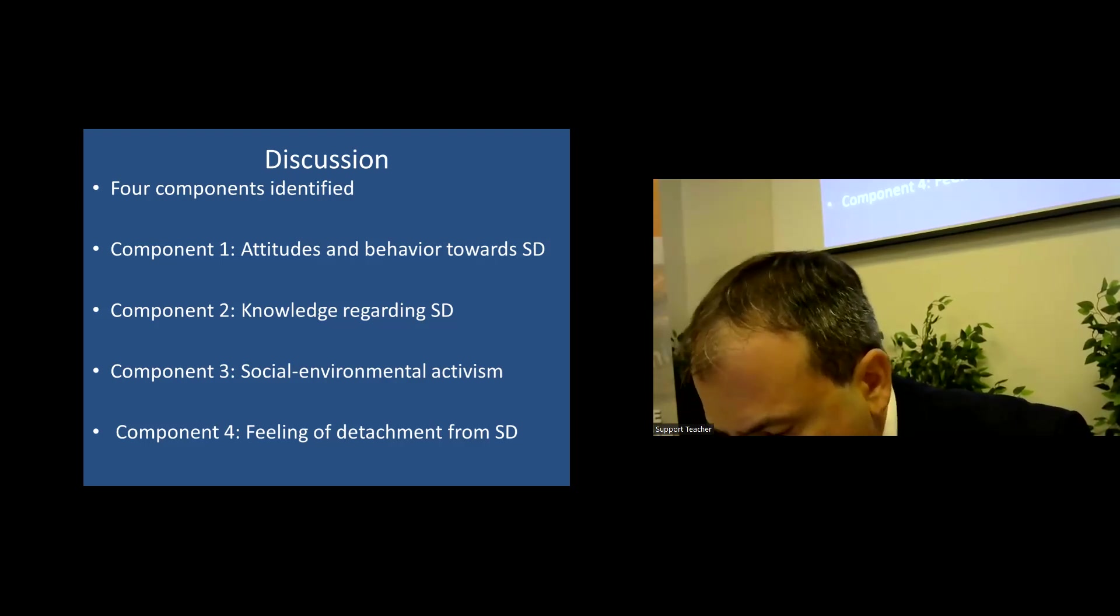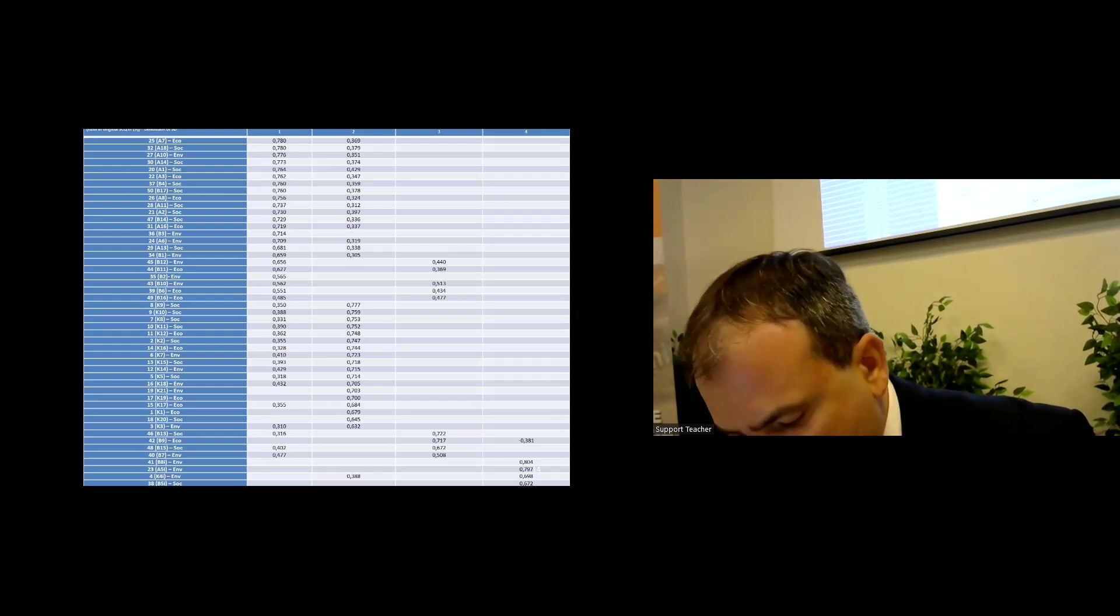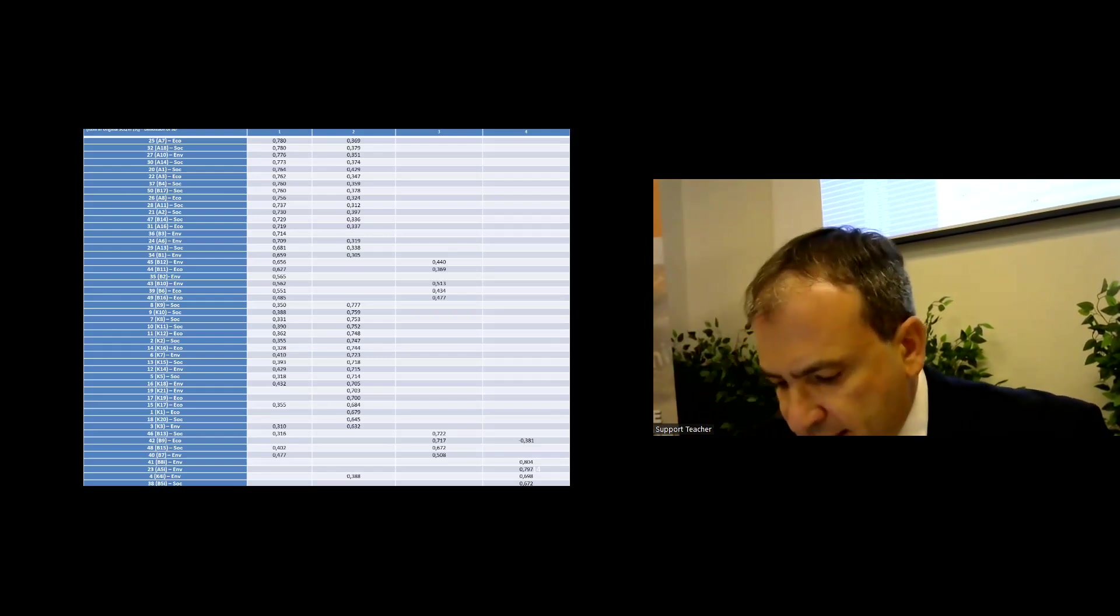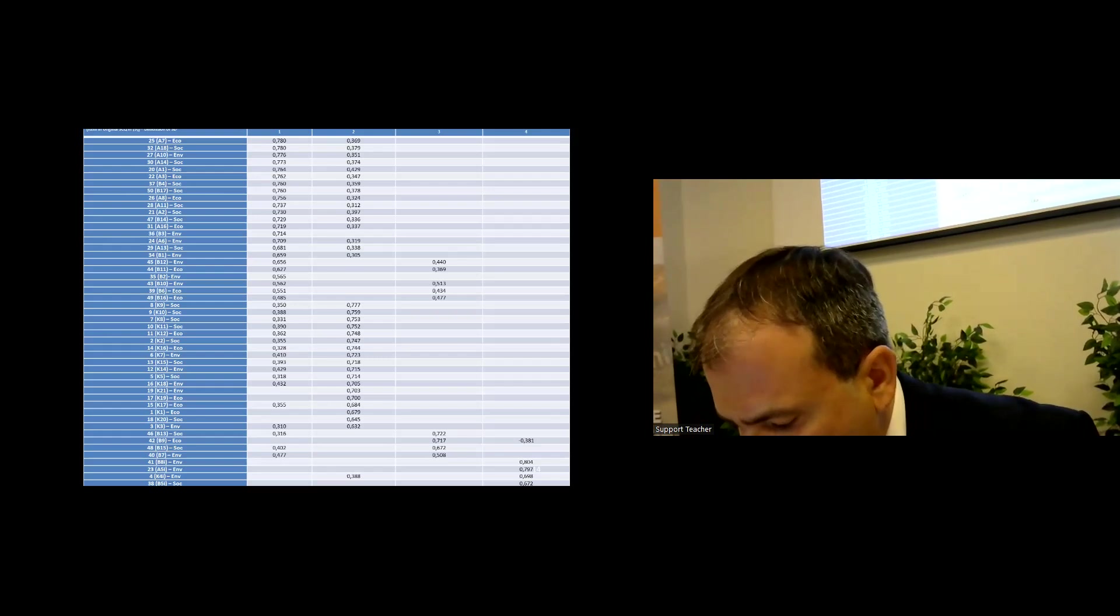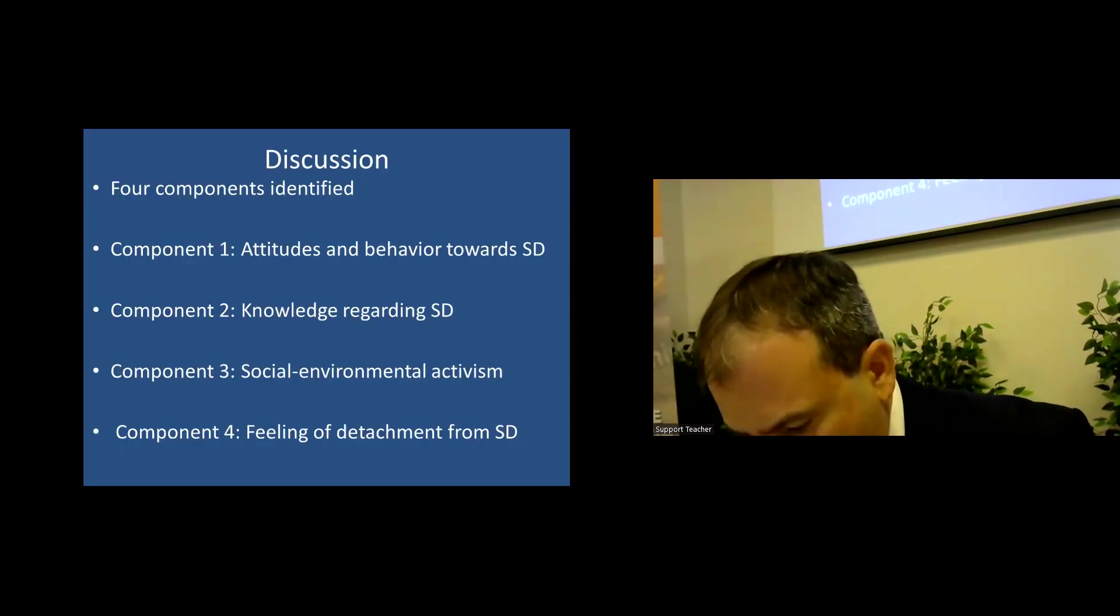Component three possesses the third highest eigenvalue and accounts for 5.25% of the total variance. It consists of four items which all refer to behavior. As in the first component, all three dimensions of sustainable development are represented: environment, society, and economy. The items of this component refer to behaviors that are more closely associated with activism. So, the factor is entitled socio-environmental activism.